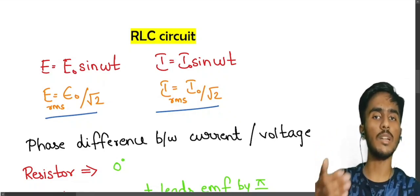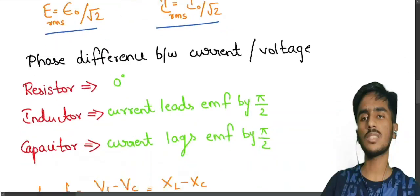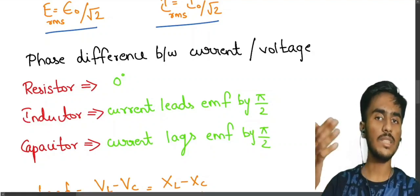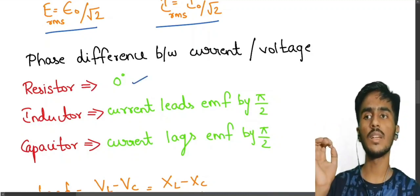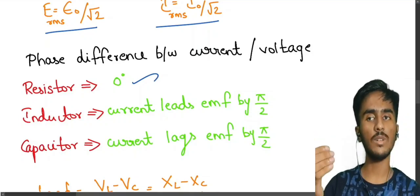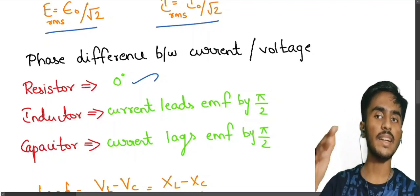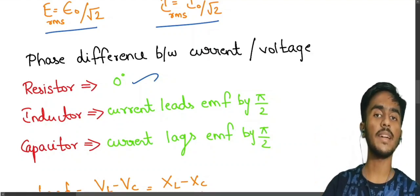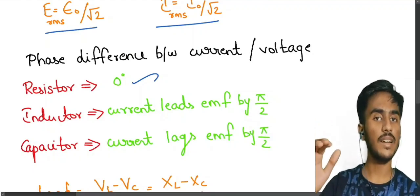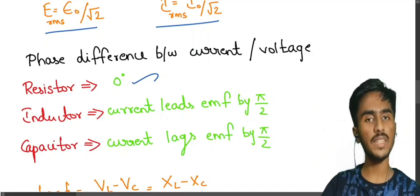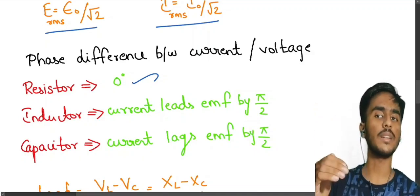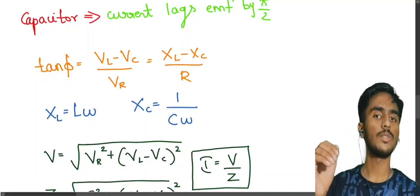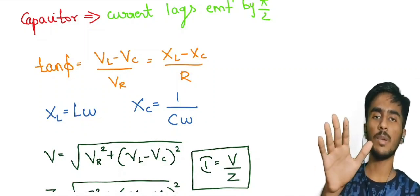What is the phase difference? In alternating current, if you have a resistor, the phase difference between current and EMF is 0 degrees. If you have an inductor in the circuit, the phase difference is 90 degrees — current lags EMF. If you have a capacitor, the phase difference is also 90 degrees — but current leads EMF. In the RLC circuit, the phase difference depends on all three components.